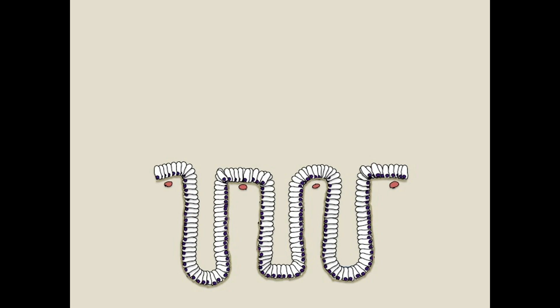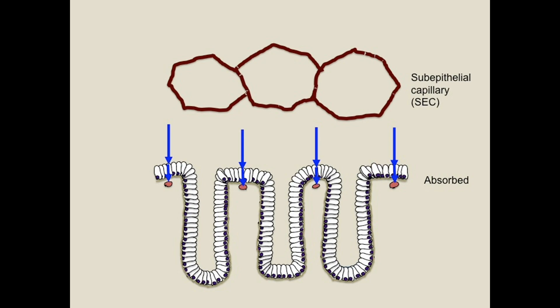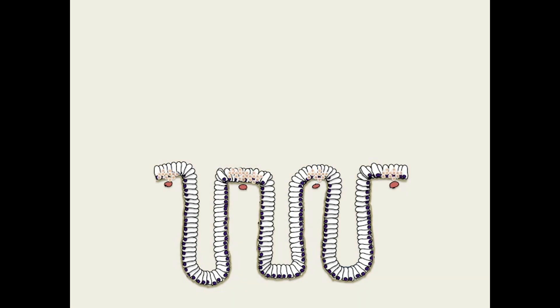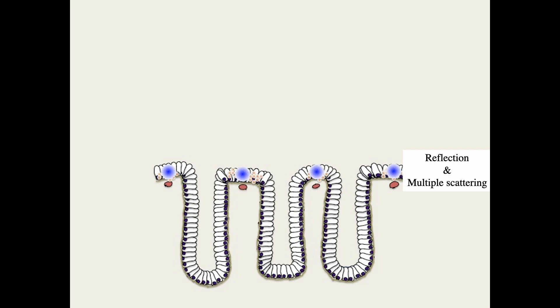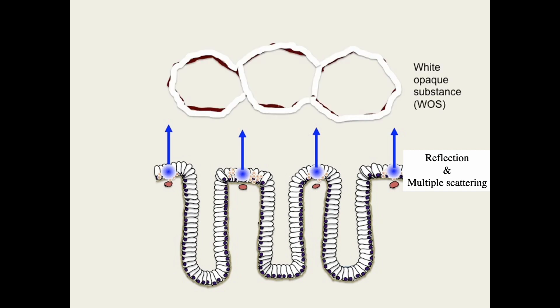To summarize visualization of White Opaque Substance: in the normal situation, when we project blue light, it is very well absorbed by subepithelial capillaries, which makes quite distinct subepithelial capillary images. However, when the accumulation of lipid droplets is present within the epithelium and we project blue light, it can cause reflection and multiple scattering, resulting in the presence of White Opaque Substance, as shown in these slides. This is just an introduction of White Opaque Substance.